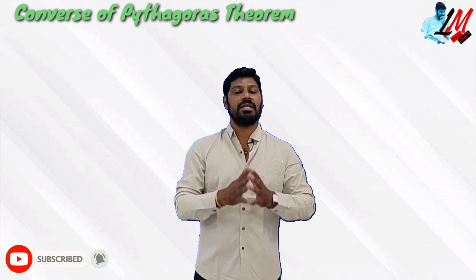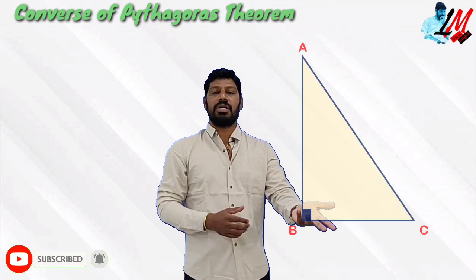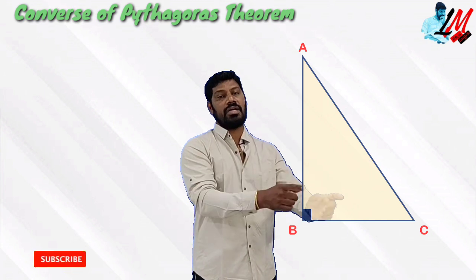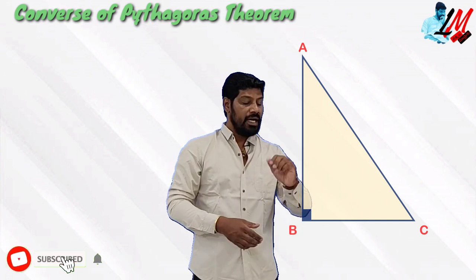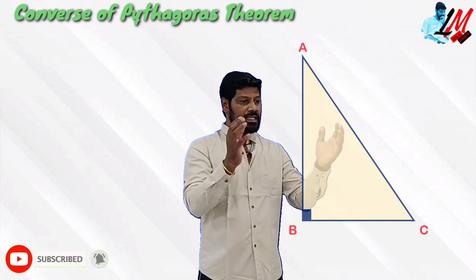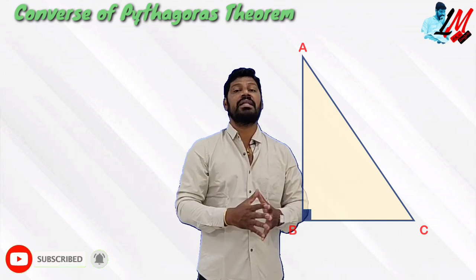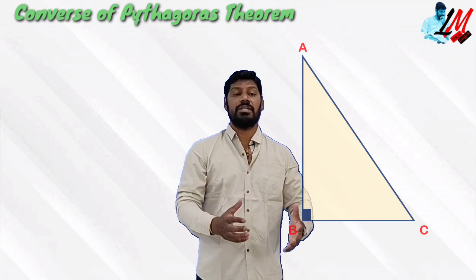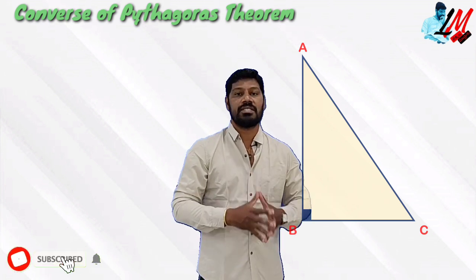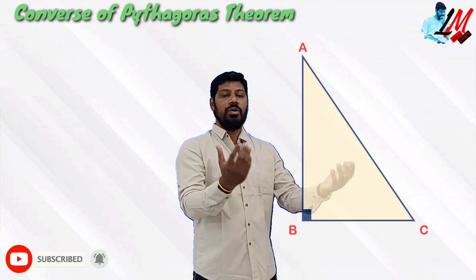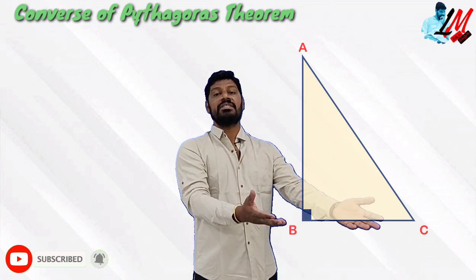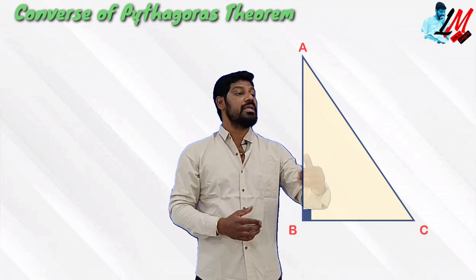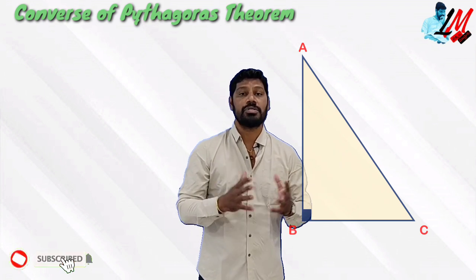If I recall Pythagoras theorem — suppose ABC is a right triangle with a right angle at B. We apply the Pythagoras theorem. In this triangle ABC, angle B is 90 degrees. Angle B is opposite to the hypotenuse.